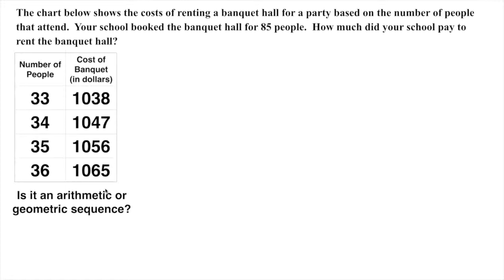Some common factor will be added to it every time. If we look here, between 1,038 and 1,047, that's 9. Between 1,047 and 1,056, that's 9. So we have a common difference, a common amount that's being added every time.